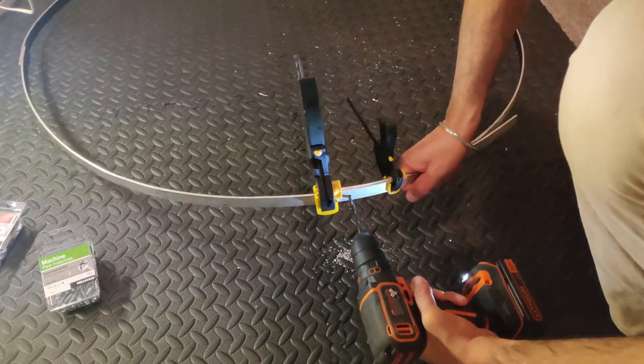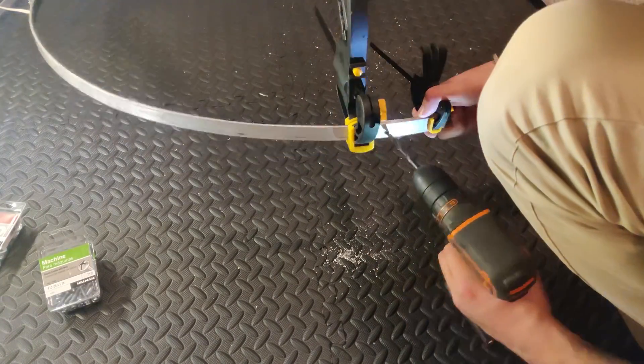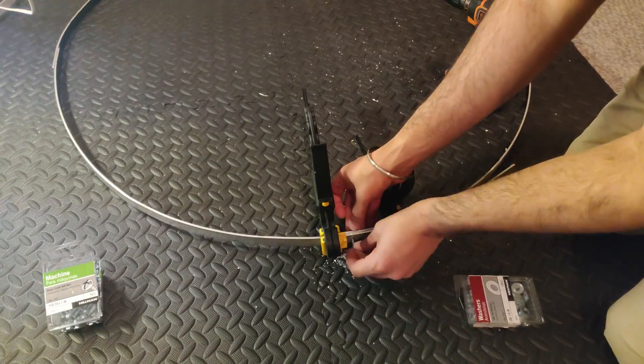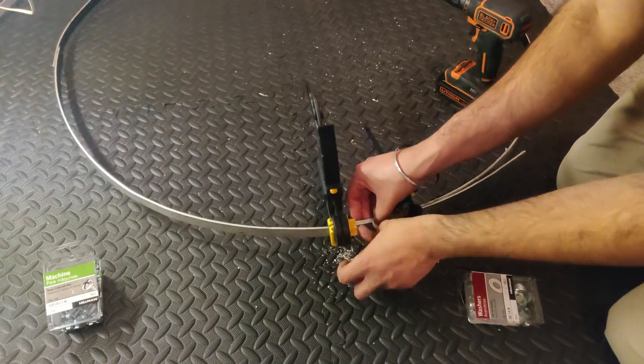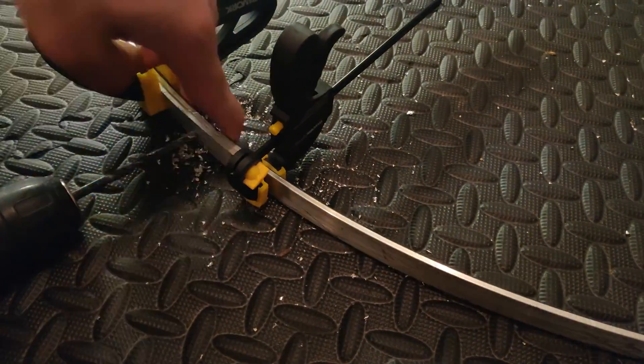So it turned out that the JB weld didn't actually work that well in terms of tacking the ends of the metal bars into holding the ring shape. So instead I had to drill some holes and then apply a nut and bolt to hold the ring shape.